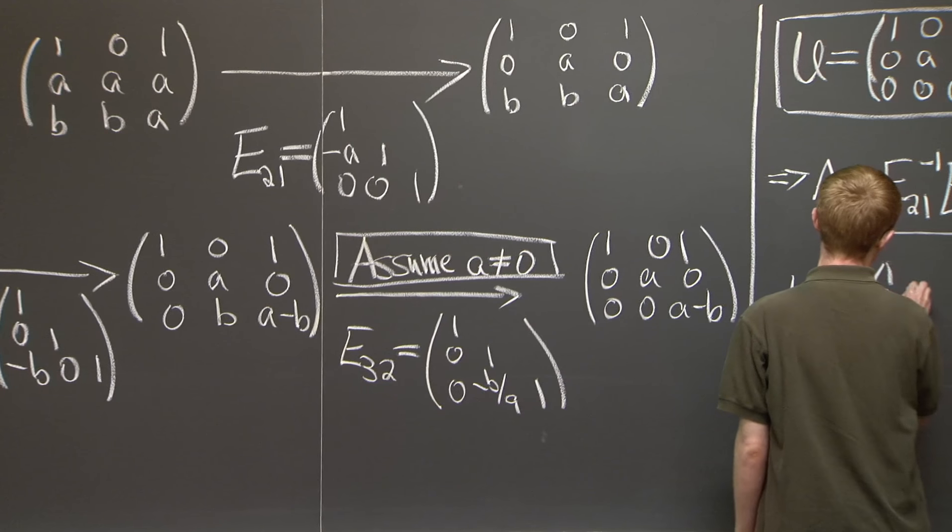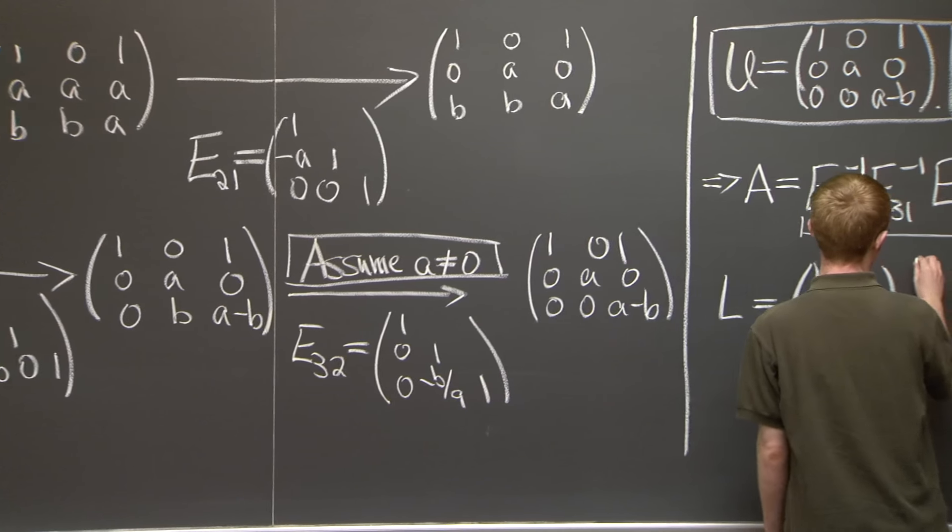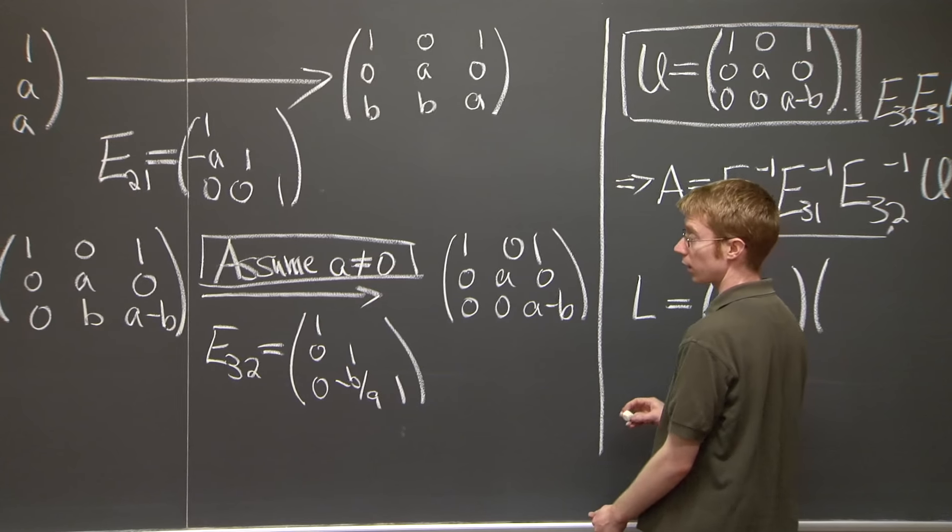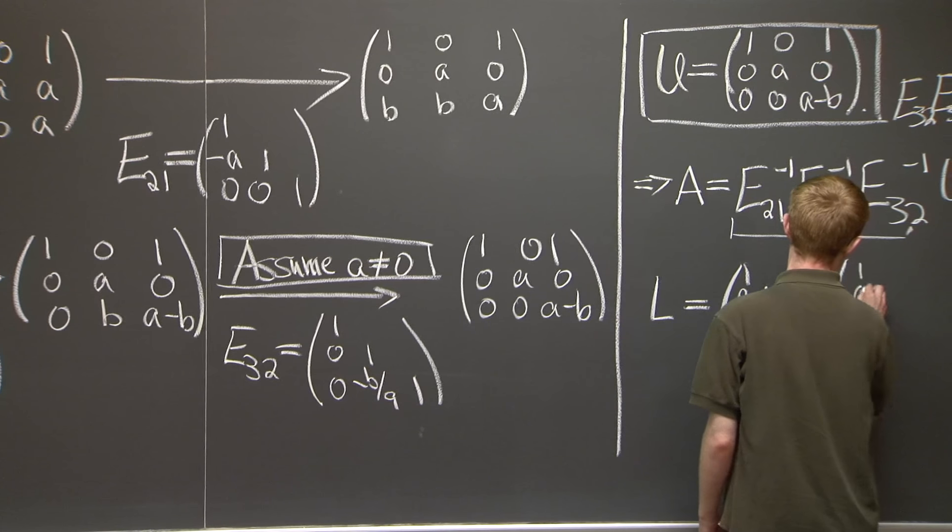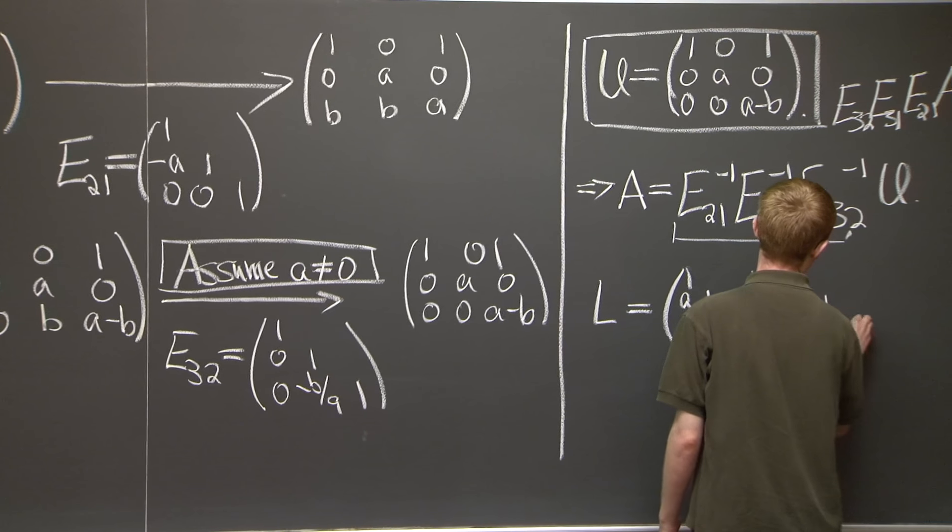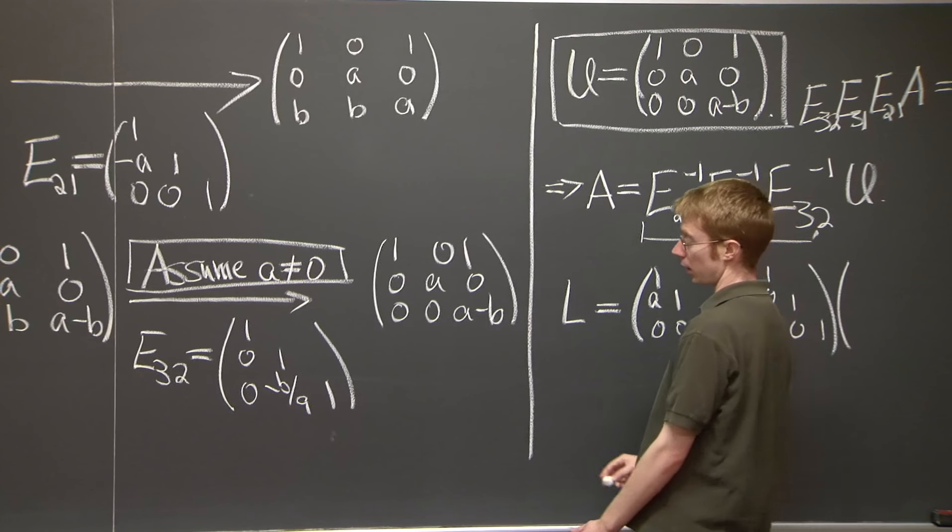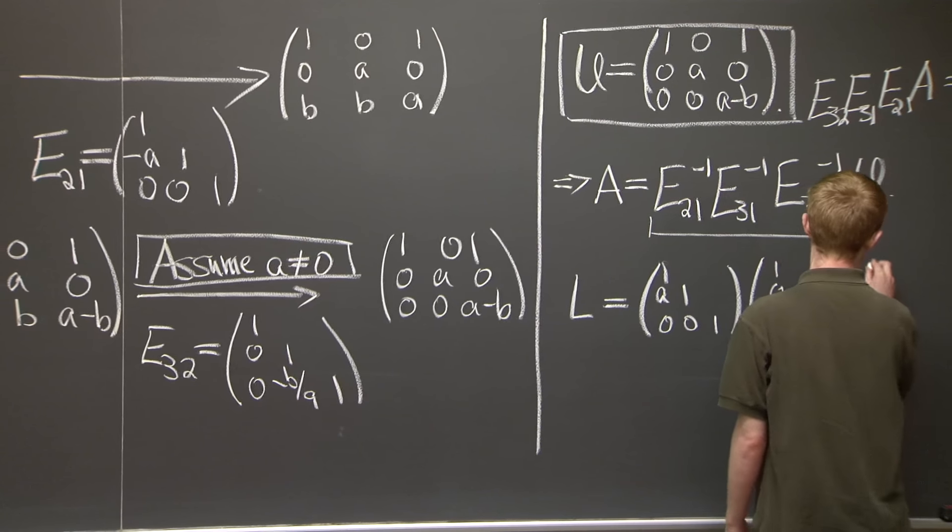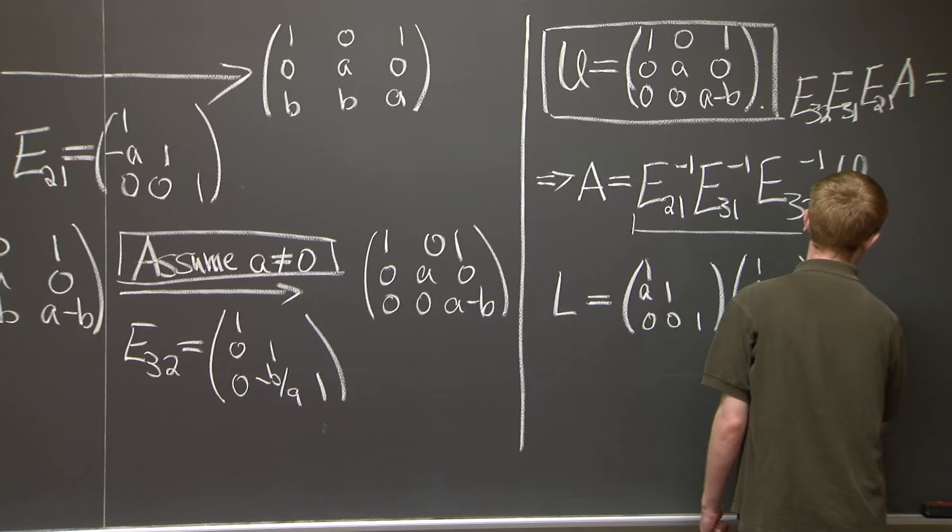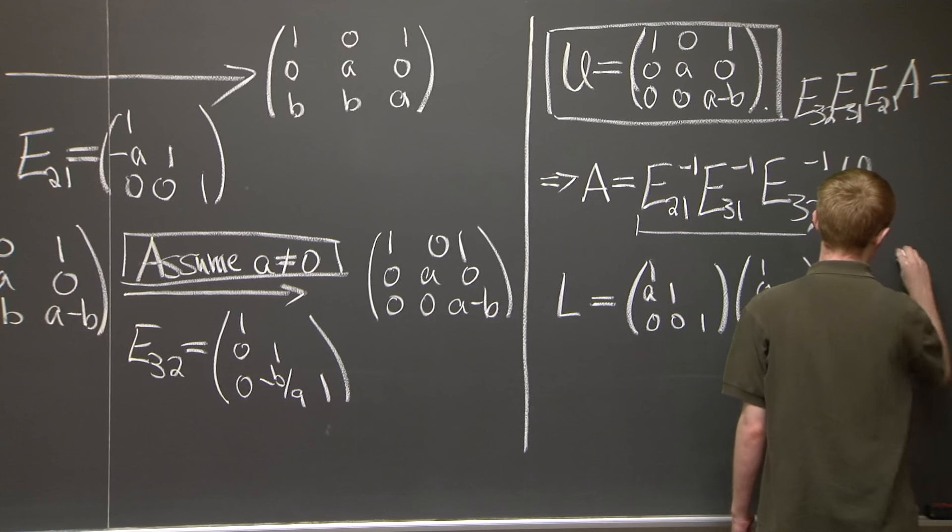So that's easy enough. We just change the off-diagonal entries. We just change their signs. You can check that that does what we wanted it to. Gives us the inverse. Good.